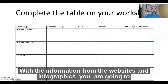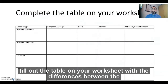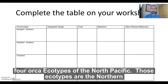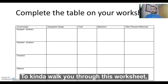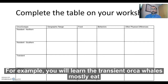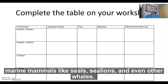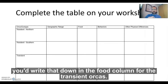With the information from the websites and infographics, you're going to fill out the table on your worksheet with the differences between the four orca ecotypes of the North Pacific. Those ecotypes are the northern residents, the southern residents, the transients, and the offshore. For example, you will learn that transient orca whales mostly eat marine mammals like seals, sea lions, and even other whales. You'd write that down in the food column for the transient orcas.